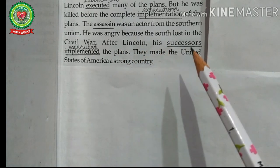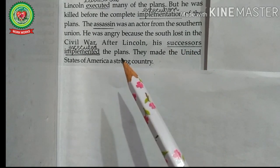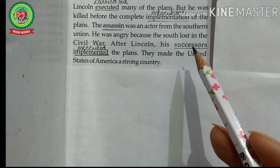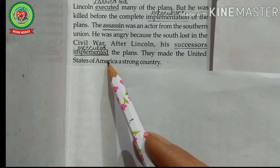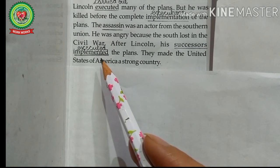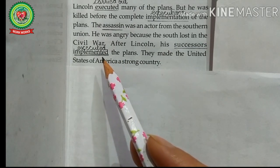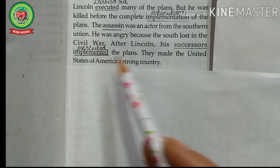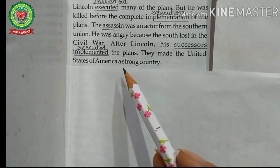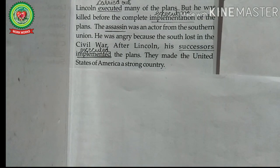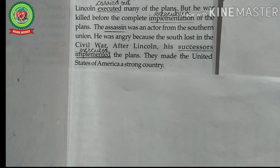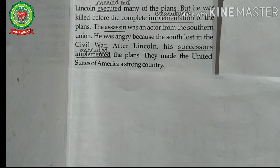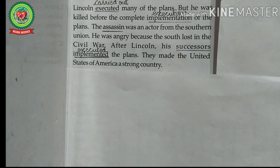Abraham Lincoln was shot while watching a play at Ford's Theater in Washington, D.C. After Lincoln, his successors implemented his plans — successors are the persons who take over and continue the role or position of another person. After the assassination of Abraham Lincoln, his successors executed the plans of reconstruction and made the United States of America a strong country. Reconstruction was a time period in America from 1865 to 1877, consisting of many leaders, goals, and accomplishments.